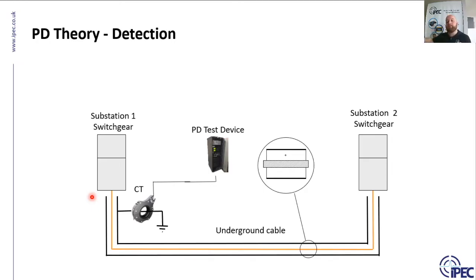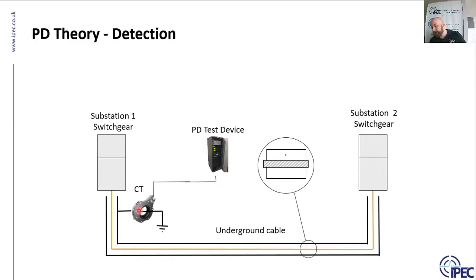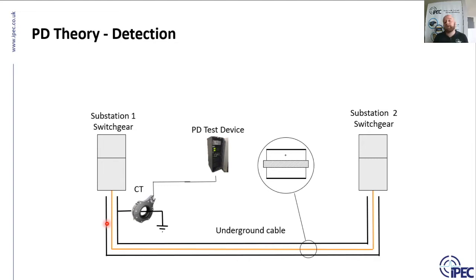When a PD occurs on an underground cable, the PD signal is induced on the core and also on the earth — you get equal and opposite signals induced on both parts of the system. If you put a sensor surrounding both the earth and the core, you won't detect any signal. So if installing the HFCT on the core, it must be on the core without the earth, and vice versa.